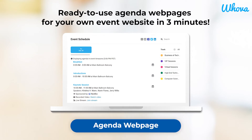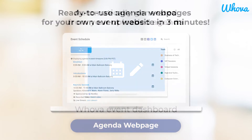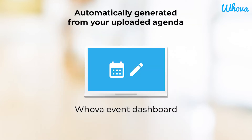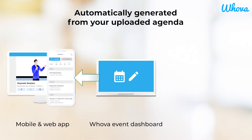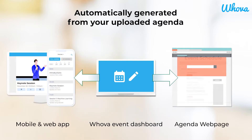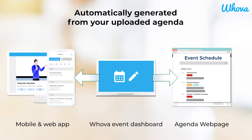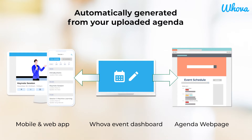With Whova, easily display your event details on your own event website through an automatically generated agenda web page. When you set up your agenda and speaker information in the dashboard, the information will flow into the mobile app and web portal and automatically generate the agenda web page for you to add into your own event website. Say goodbye to manual, repetitive work.